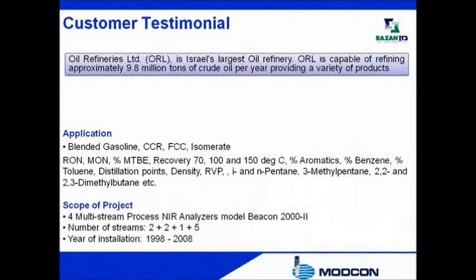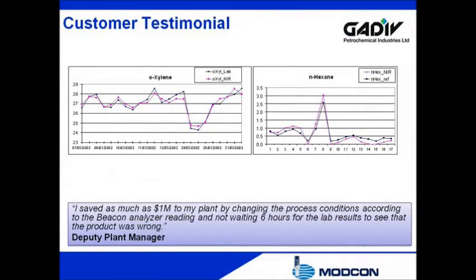GATIV is a part of Bazin Oil Refineries Limited in Haifa, Israel. GATIV implemented a dynamic advanced control system developed specifically for the company's unique requirements, raising the plant's production capacities to over 500,000 tons of 15 different products annually. As part of the process control system, GATIV implemented the Beacon 2002. For over one and a half decades, one analyzer controls successfully the quality in 16 different process streams. Due to the compliance between laboratory and NIR analytical results, the Beacon 2002 is successfully applied to economically control the production process in the BTX plant.